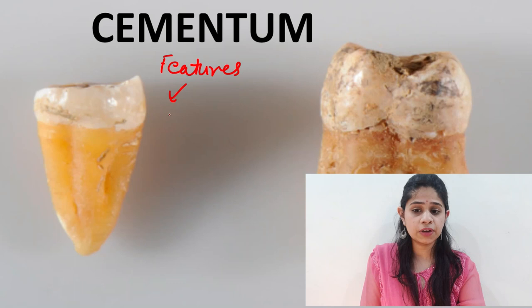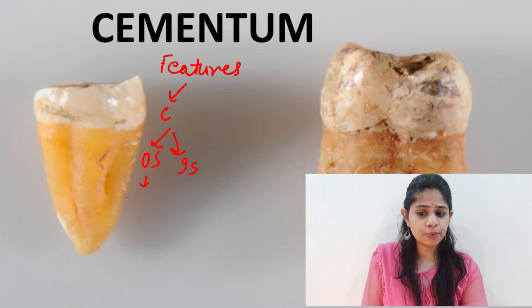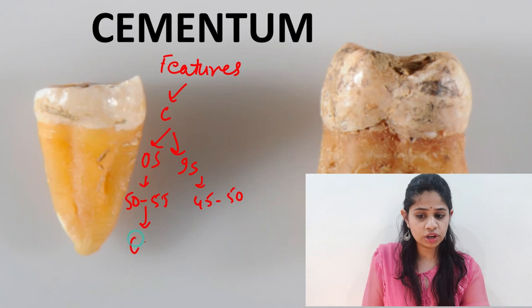Organic substances are approximately 50 to 55 percent and inorganic substances are 45 to 50 percent. Organic substances are mainly composed of collagen fibers, and inorganic substances are made up of hydroxyapatite crystals.